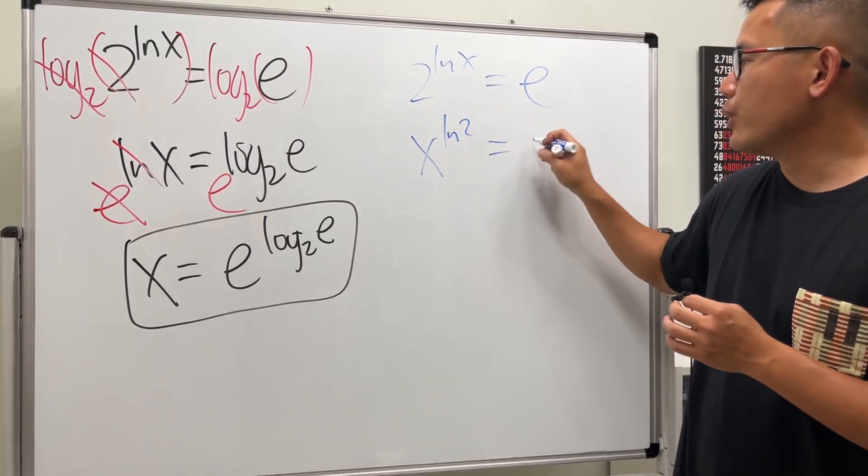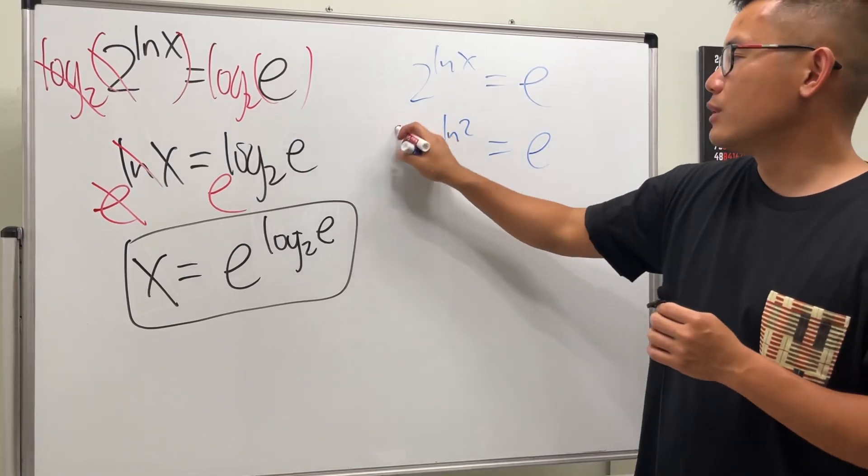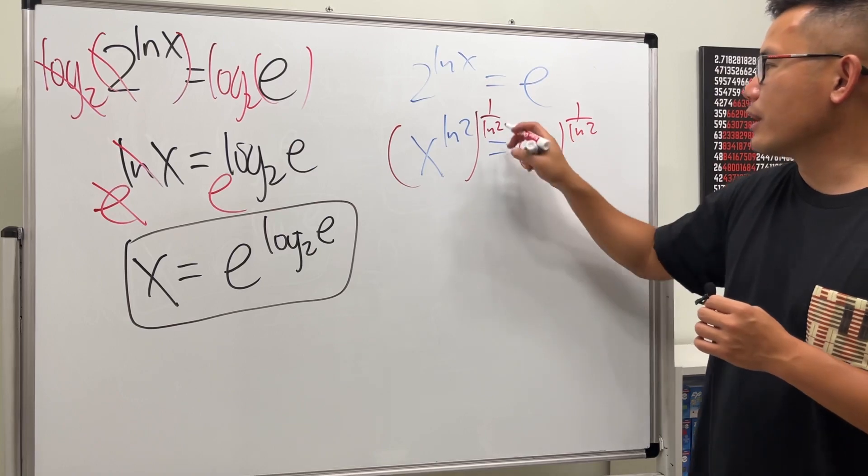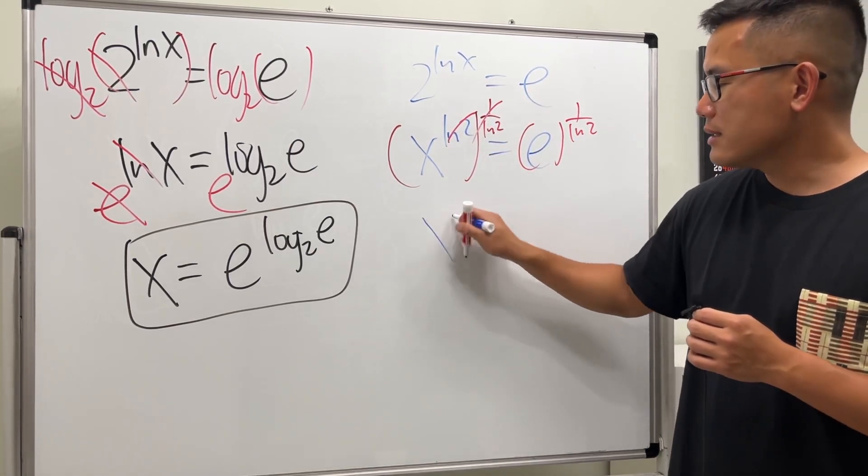So we can just raise both sides to the 1/(ln 2) power. I'm not kidding, okay? This and that will cancel, so x = e^(1/ln 2).